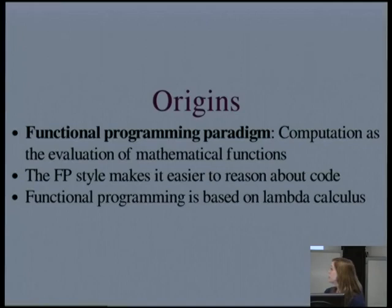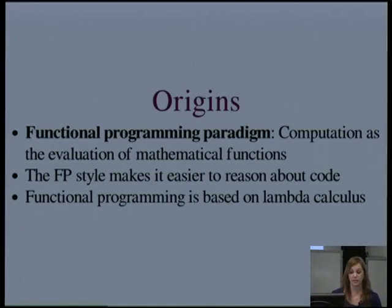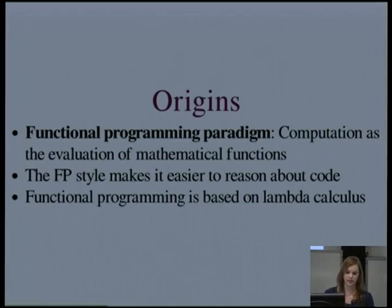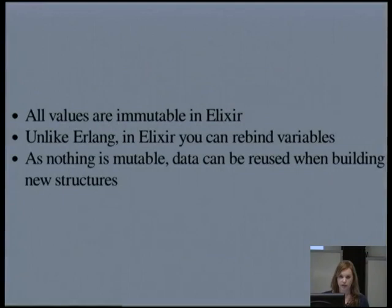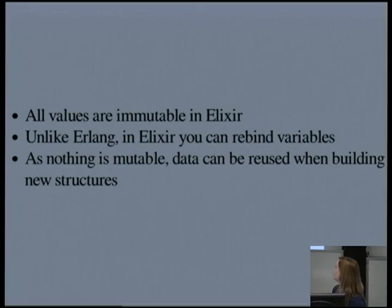One of the big motivations for programming in this style is because it makes it easier to reason about the behaviour of your program, which in turn makes it easier to test, debug, maintain, and also to run things in parallel. Functional programming has its origins in lambda calculus, a formal mathematical system developed back in the 1930s by Alonzo Church — so these ideas are certainly not new. The first functional area I want to look at is immutable data. All values are immutable in Elixir — lists, tuples, records, strings, whatever. Unlike in Erlang, it doesn't have single assignment, so in Elixir you can rebind variables.